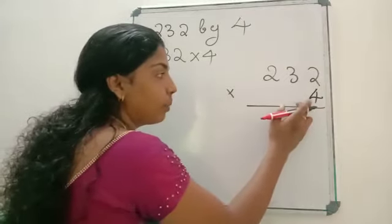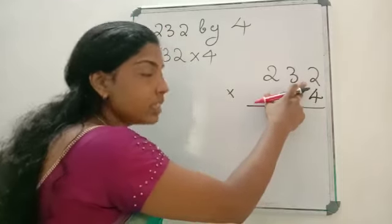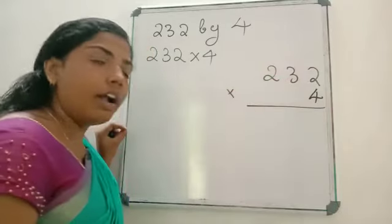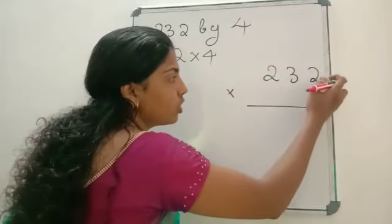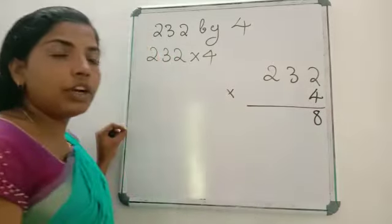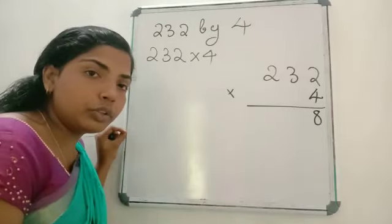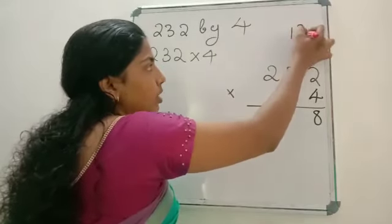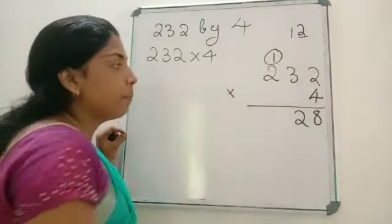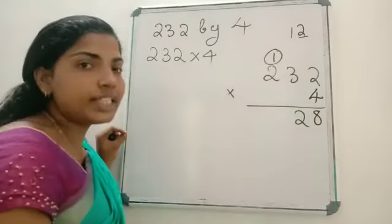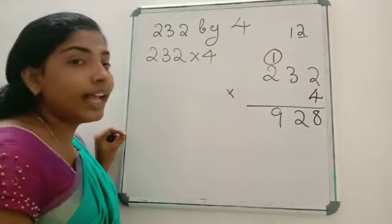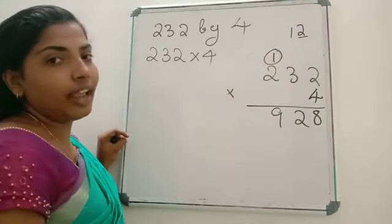While multiplying, we have to multiply 4 with the number in the 1's place, then 4 with the number in the 10's place, then 4 with the number in the 100's place. So first, 4 into 2 is 8. Again, 4 into 3 is 12. From 12, we write 2 here and give the 1 as carryover to the next place. Again, 4 into 2 is 8, plus the carryover 1 is 9. So 232 into 4 is 928.